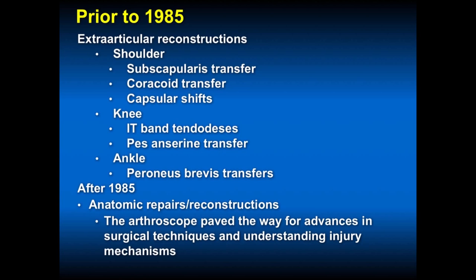Now in 2017, we're back to IT-band tenodeses. There are different techniques, used as a backup for a failed ACL reconstruction. We do an anatomic ACL reconstruction with a graft of choice — usually the patient's own tissues: bone-patellar tendon-bone, quad tendon, or hamstrings — placed in the right position. But certain patients may need more lateral stability. Repairs of the ALL usually don't work, so we do some form of a tenodesis, extra-articular, to reduce the pivot shift.